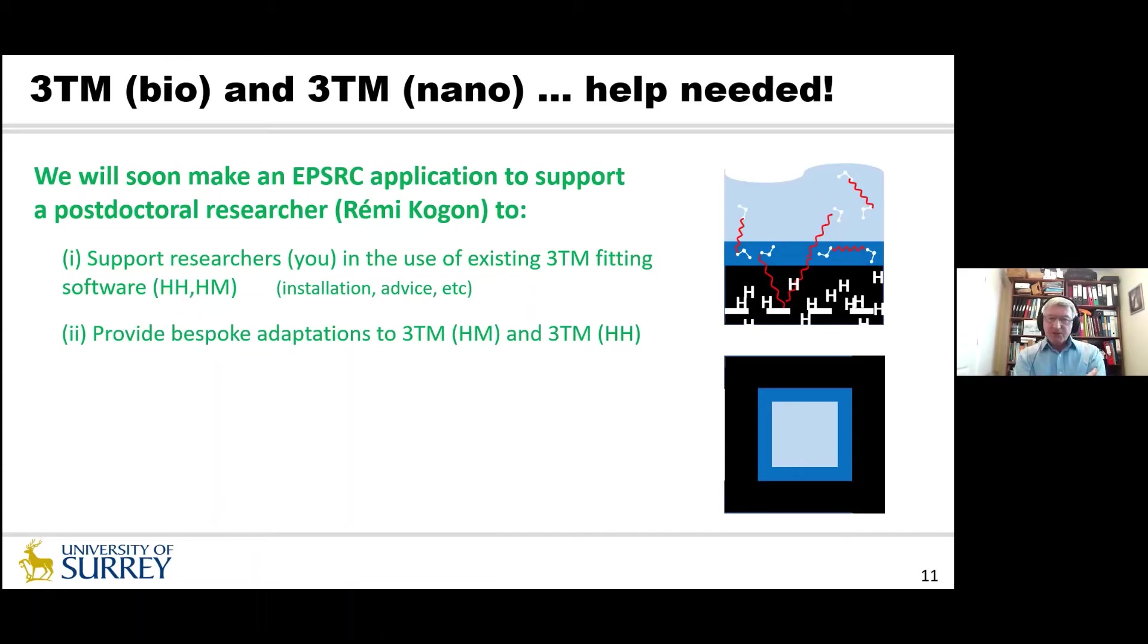We are also keen to provide what I call bespoke adaptations to the existing models. So you might have the open source software. You might be able to use it, but it doesn't quite do what you want to do. There's something a little bit extra you would like to do with it. An adaptation. And we would be very willing to support you and to make the necessary adaptations if that was feasible. And the third is what I've just been talking about. The two new areas, the bio and nano model variants. So that would involve me doing the calculations, generate the data sets. That's the easy part. And for Remy, preparing fresh interfaces for these two model variants.